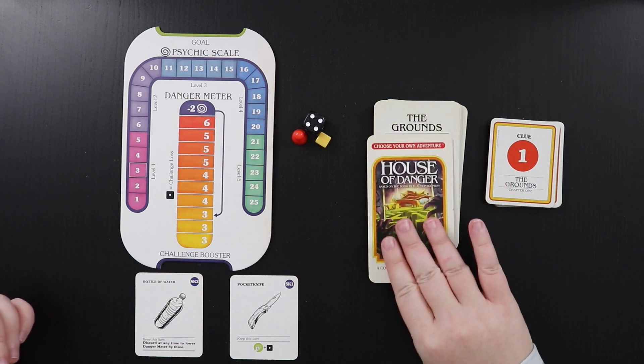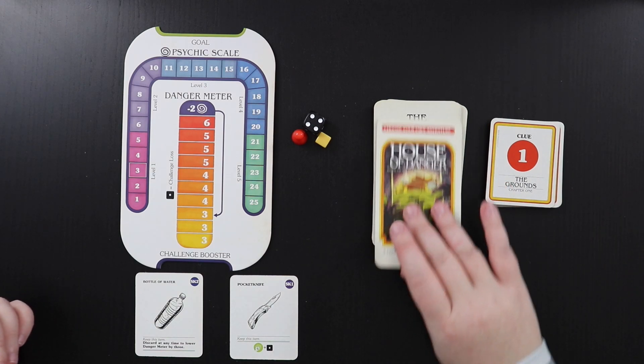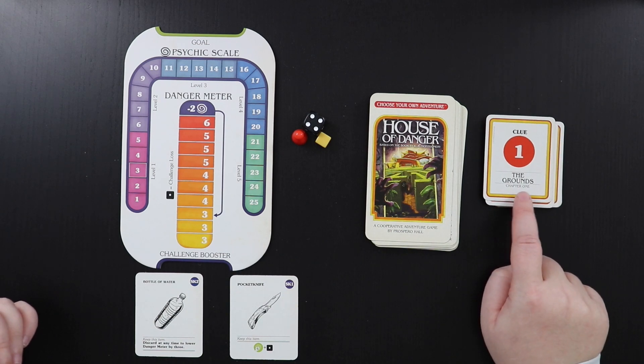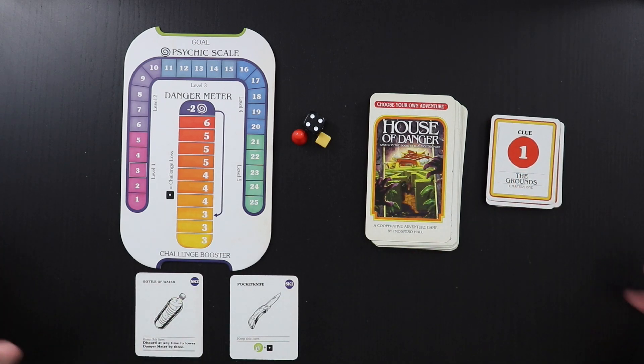However, it's really convenient. Everything has a chapter number on it and everything can be put back in order, so if you're putting it back together to play again, it's not actually difficult to do. It's just made for your convenience the first time you play.